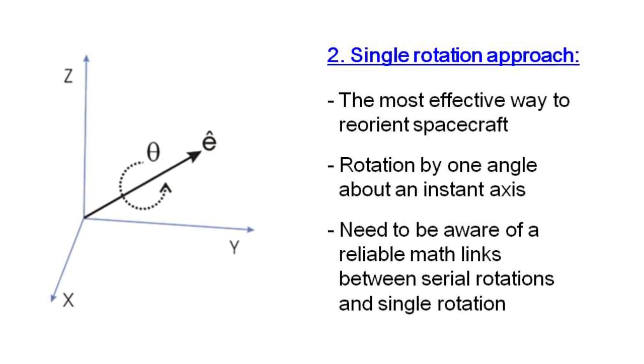We stress that the most effective way to reorient spacecraft is a single rotation by one angle about an instant axis. And this is the paradigm of the second type of spacecraft reorientation. But effective use of this approach requires a reliable mathematical link between three angles assigned for reorientation and one angle of the single rotation.